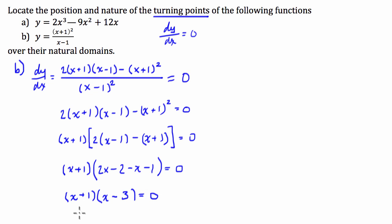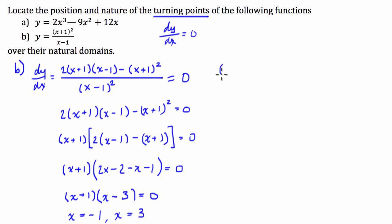So the x-coordinates of our turning points are x equals negative 1 and x equals 3. Like we did in part A, we evaluate the function at these two points. At x equals negative 1: (negative 1 plus 1) squared over (negative 1 minus 1) equals 0 over negative 2, giving the point (negative 1, 0). At x equals 3: (3 plus 1) squared over (3 minus 1) equals 16 over 2, which is 8, giving the point (3, 8).